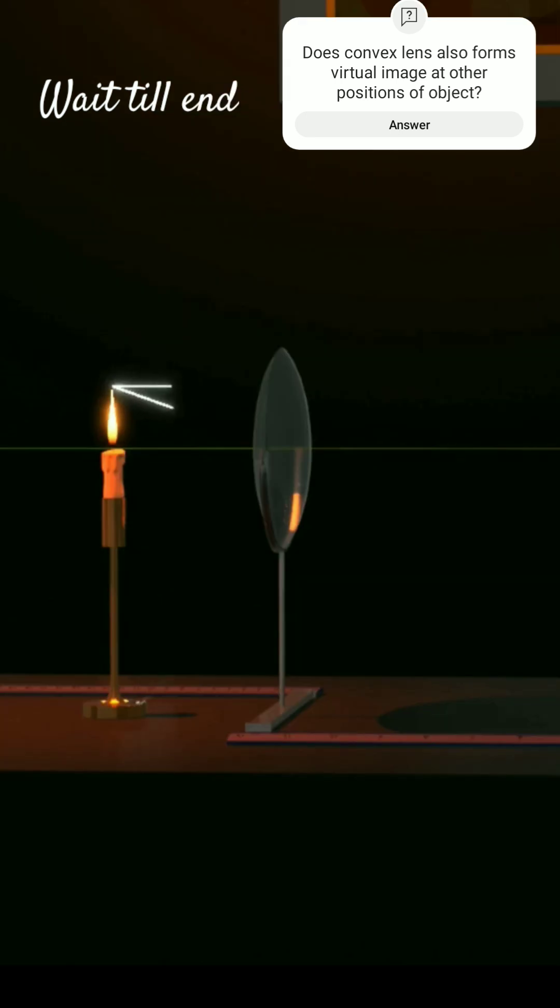Now, to find the image of the candle, we have to draw two incident rays. One incident ray parallel to principal axis and the second incident ray passing through the optical center.